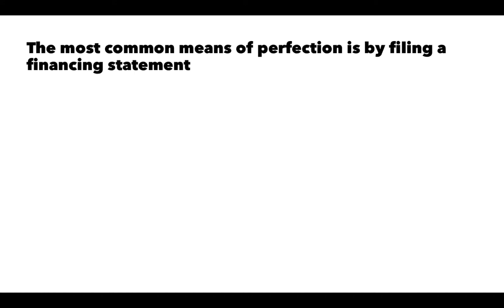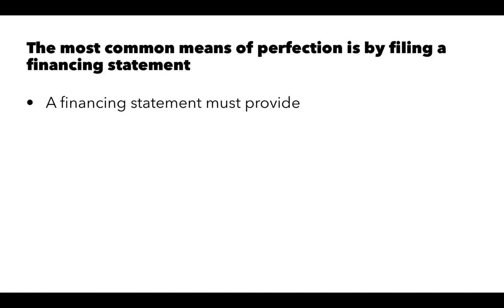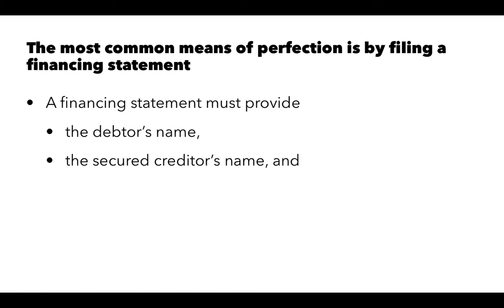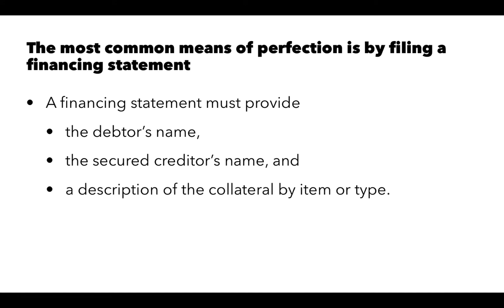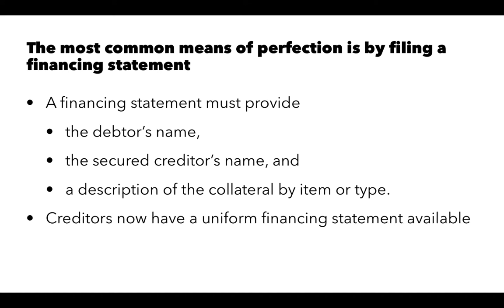The most common means of perfection is by filing a financing statement. A financing statement is a document that the secured party files to give notice to third parties that it claims an interest in the debtor's property. In order to be valid, a financing statement must provide the debtor's name, the secured creditor's name, and a description of the collateral by item or type. There is a uniform financing statement available, and you can read more about that in your textbook.